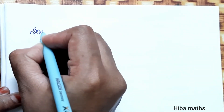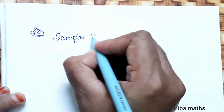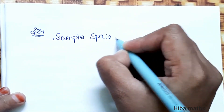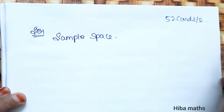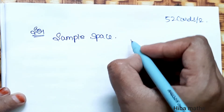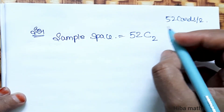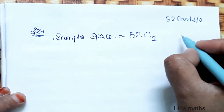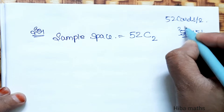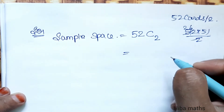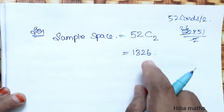In the solution, first we find the sample space. There are 52 cards, so the sample space is 52C2. That equals 52 into 51 divided by 2, which gives us 26 into 51, equal to 1326.